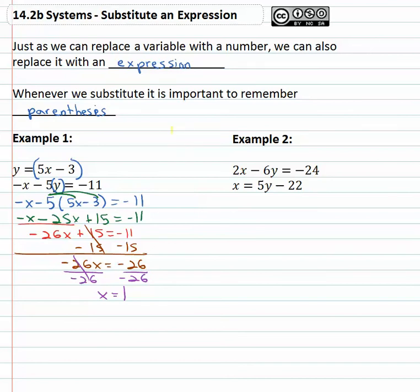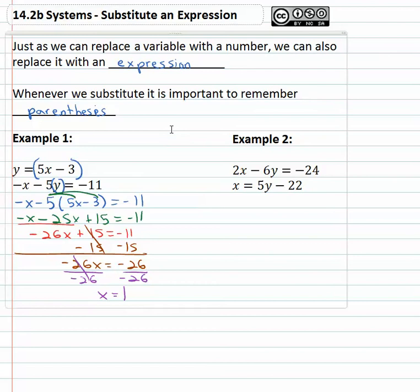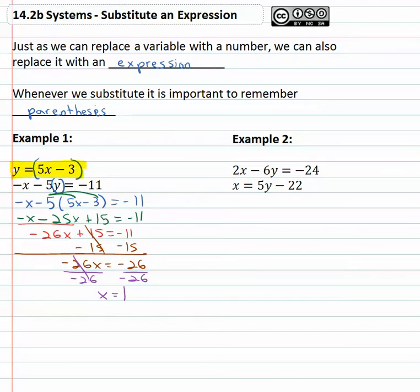We now know what x equals, we just don't know what y equals. Well to find out what y equals, we're going to find the equation that says y equals stuff. Here we're told that y = 5x - 3. So if y = 5x - 3 and x is 1, then y = 5(1) - 3. So y is equal to, using order of operations, 5 times 1 is 5 minus 3, y is equal to 2. We now have our solution as x comma y: 1 comma 2.